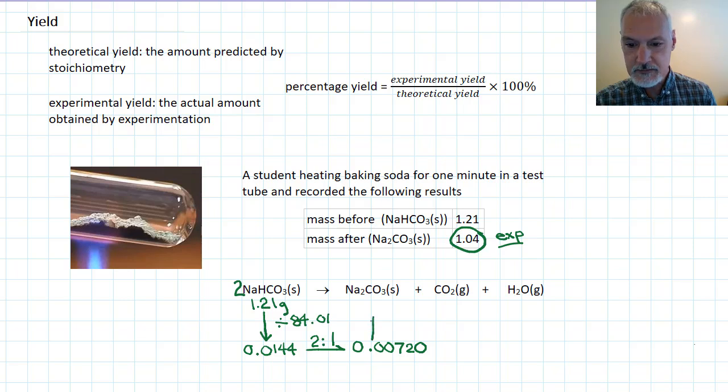And now to convert this back into grams, I have to multiply by the molar mass of this chemical, which is 105.99. And that gives me 0.763 grams. So this number here, this represents what theory says I should get.